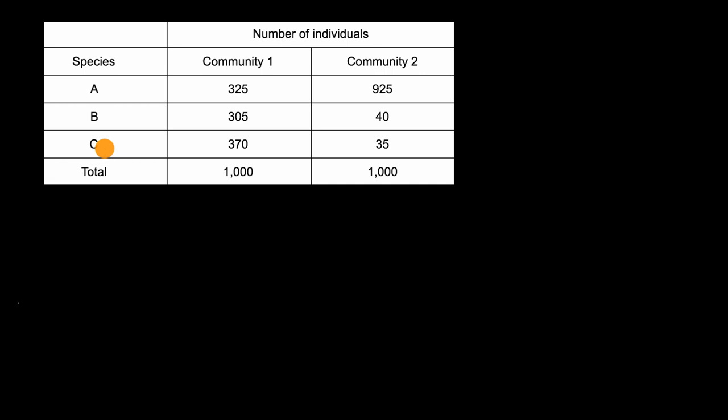But when we look at the data, it's clear that community two is mostly species A, and you have very small groups of species B and species C, while community one is more evenly spread. So just intuitively, it feels like community one is maybe more diverse.